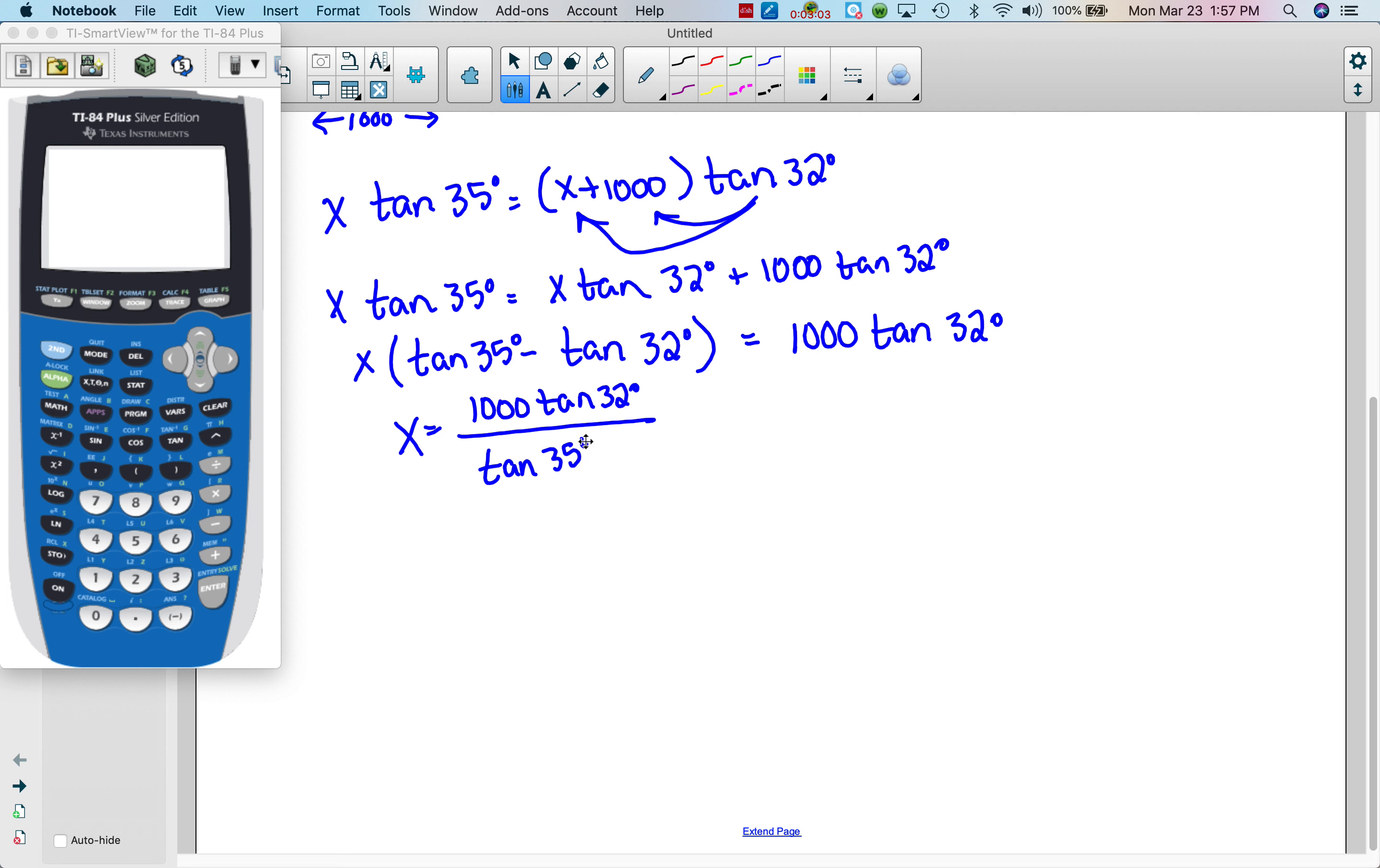Okay, so now I can say X equals a thousand tangent 32 over tangent 35 minus tangent 32, and we could work that out. Okay, so we get approximately 8294, what are my units, and that is feet.